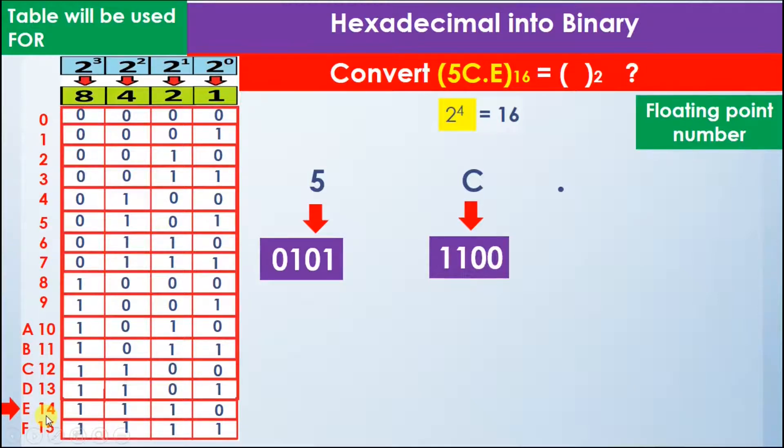The binary value of E is 1110, so we write E as 1110.